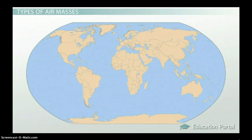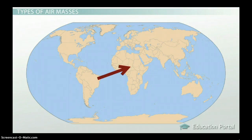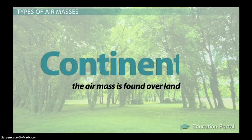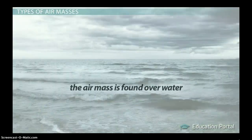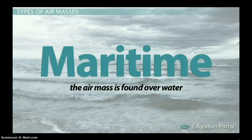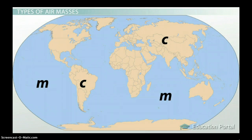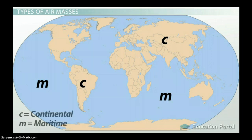Air masses can be divided into two main categories based on whether they are found over land or water. If the air mass is found over land, this is a continental air mass. If the air mass is found over water, this is a maritime air mass. Continental air masses occur over the continents; maritime air masses occur over water or marine environments. These categories are represented by a lowercase c for continental or m for maritime.